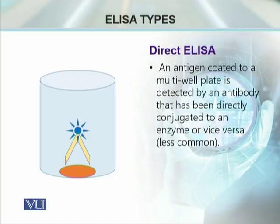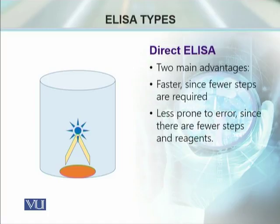We add the substrate and we get the signal if the conjugation is there. This method has two advantages: it is a faster method and it is less prone to errors, because very few steps are involved to get the results from this particular method.